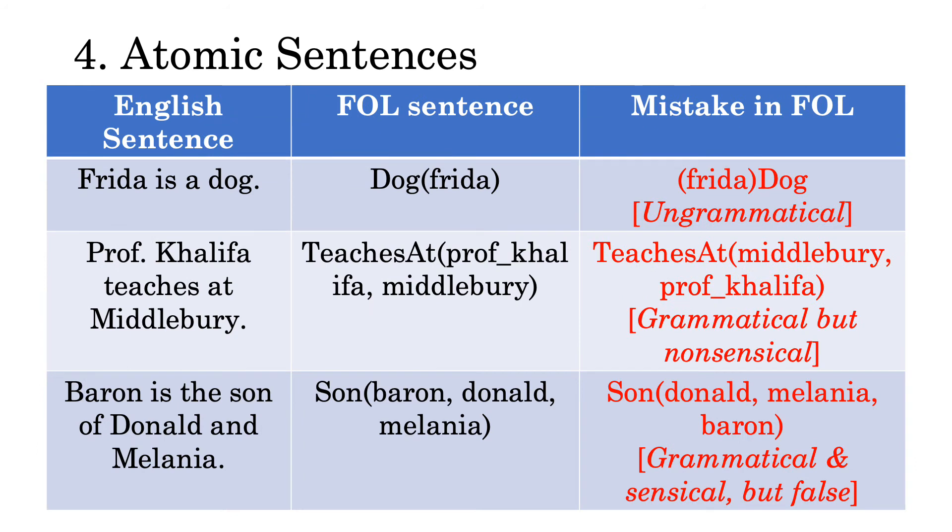So the last example is different from the previous two in that it's both grammatical and sensical. What it says is that Donald is the son of Melania and Barron. The problem isn't that we don't understand what that means. We just recognize that it's false.